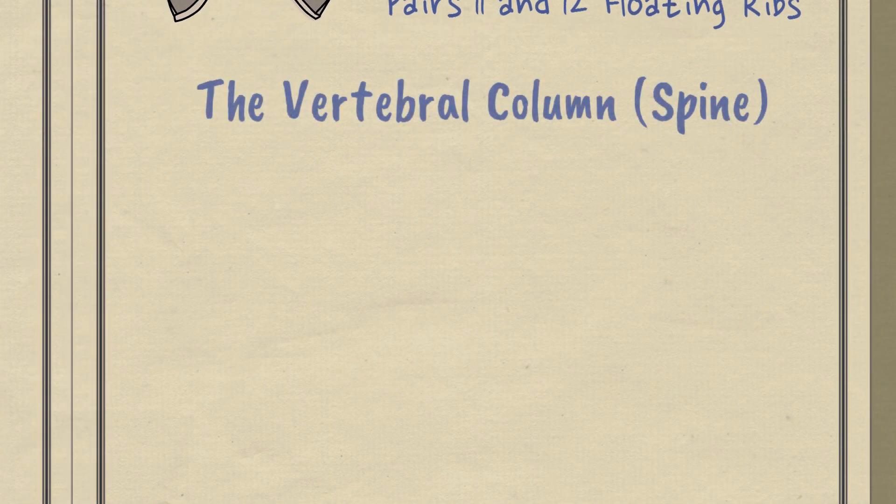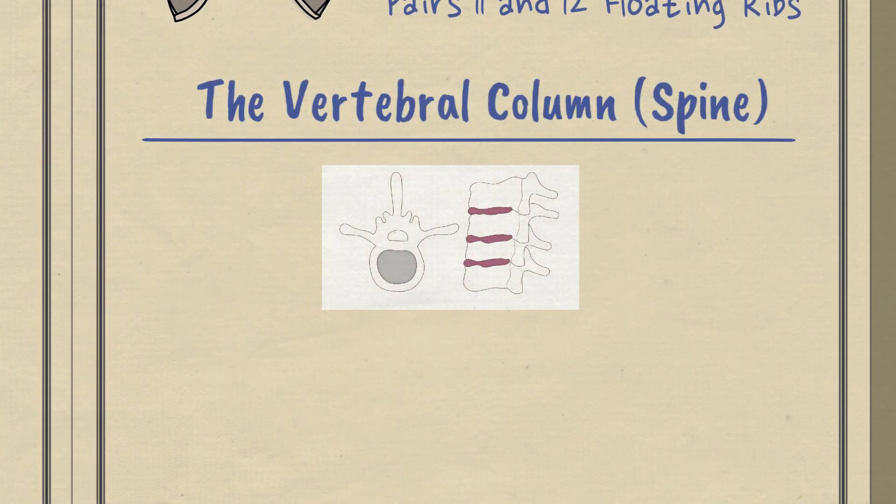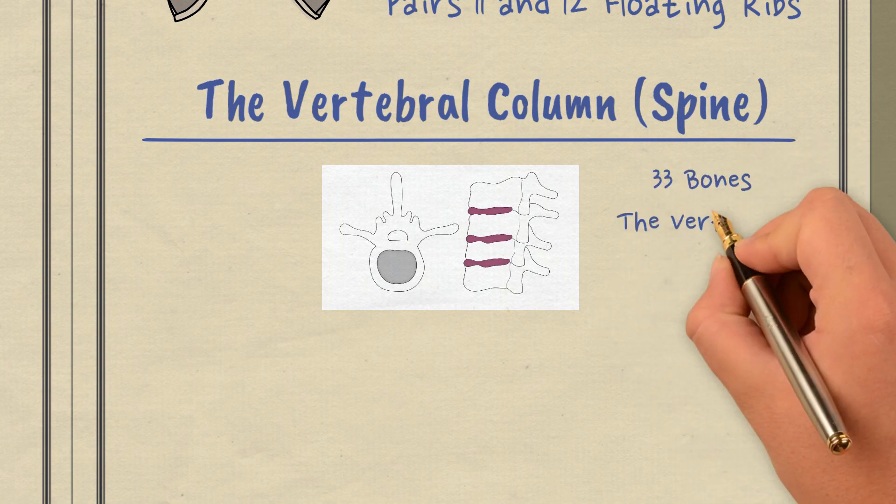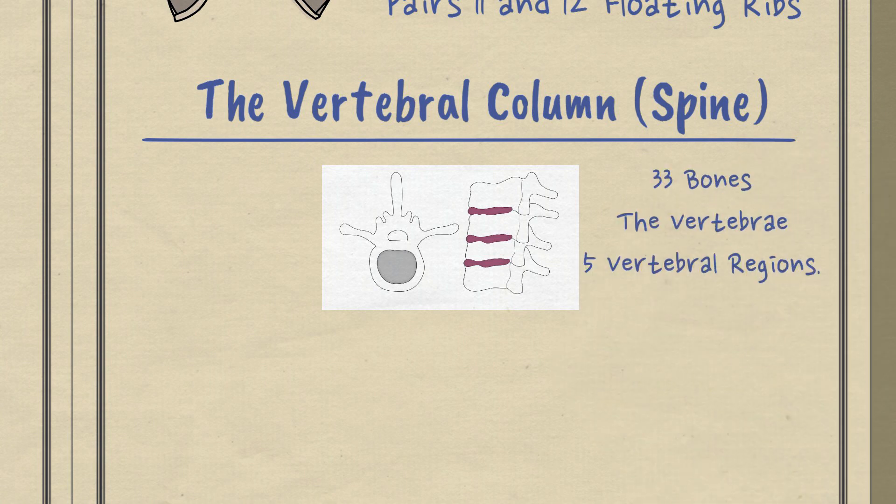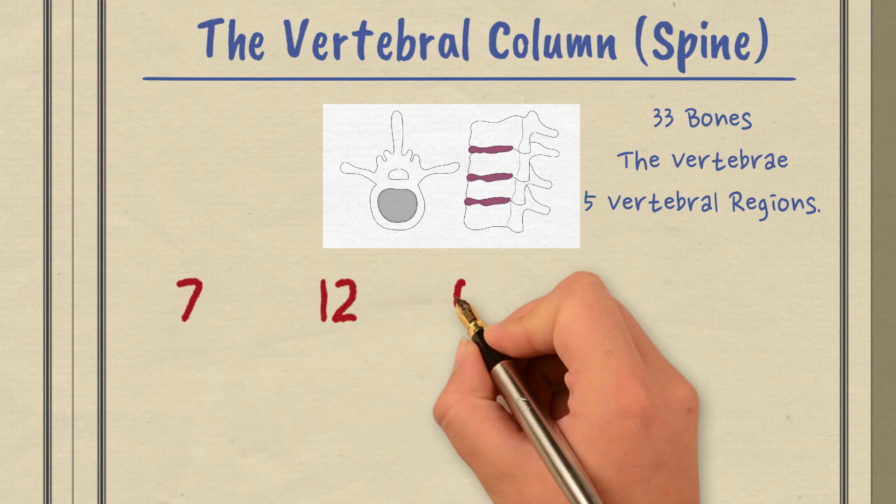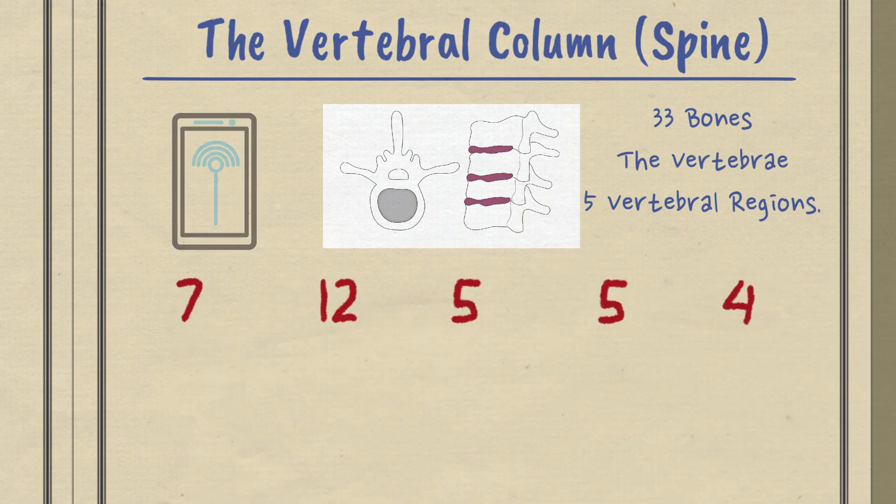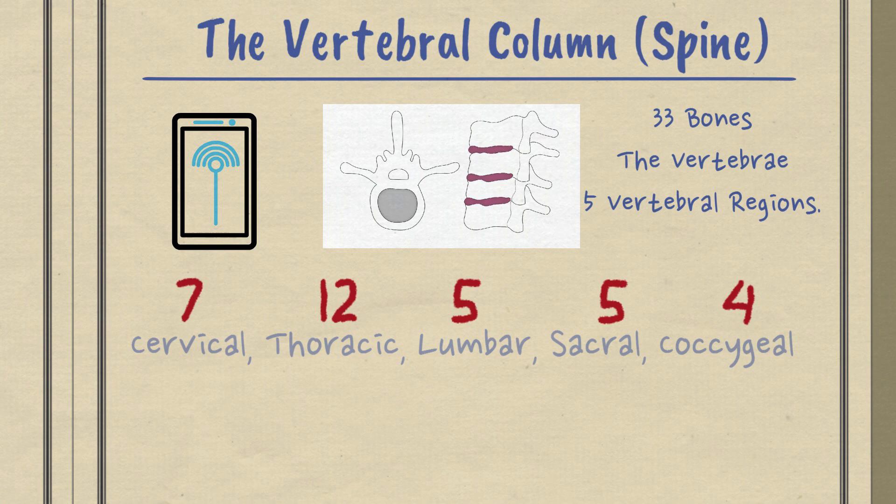So finally, the vertebral column, otherwise known as the spine, it's made up of those 33 bones, the vertebrae. There are five vertebral regions. You have to know the number of bones in each region, so you learn the phone number 712 554 and you've got your rhyme, Charlie tells Larry something clever to learn the names.